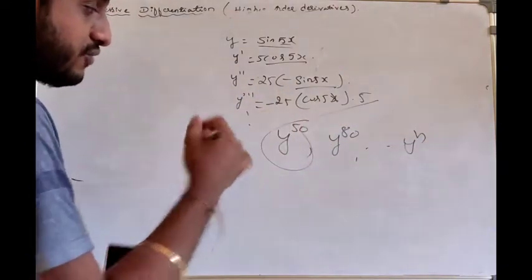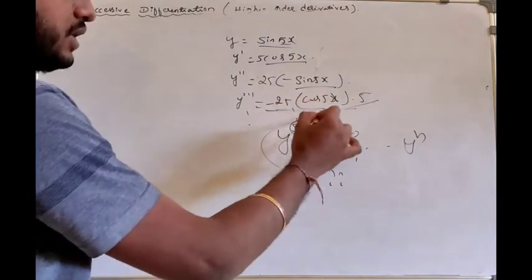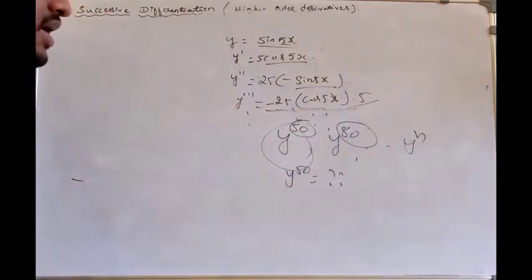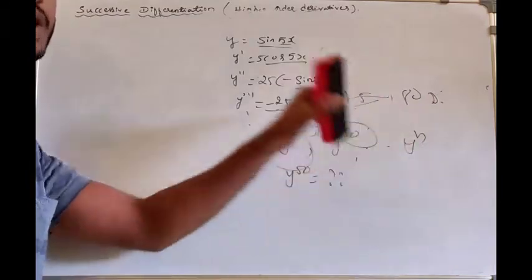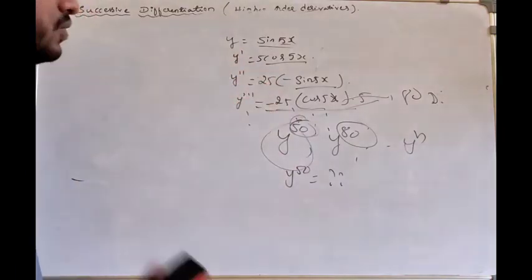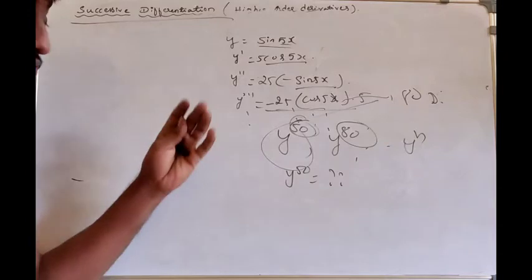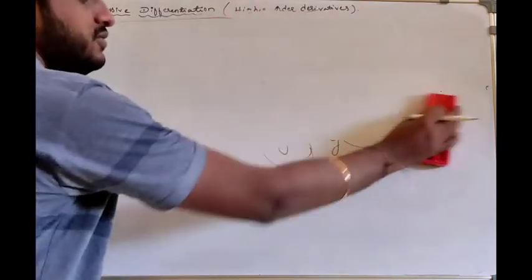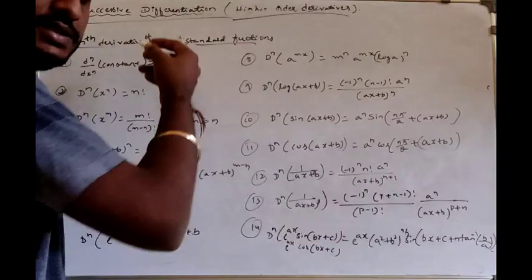We have to find the nth derivative, and also the 50th derivative. To find these efficiently, instead of differentiating 50 times, we use some standard derivative formulas for nth derivatives. By using the standard derivative functions, we can handle these remaining problems.